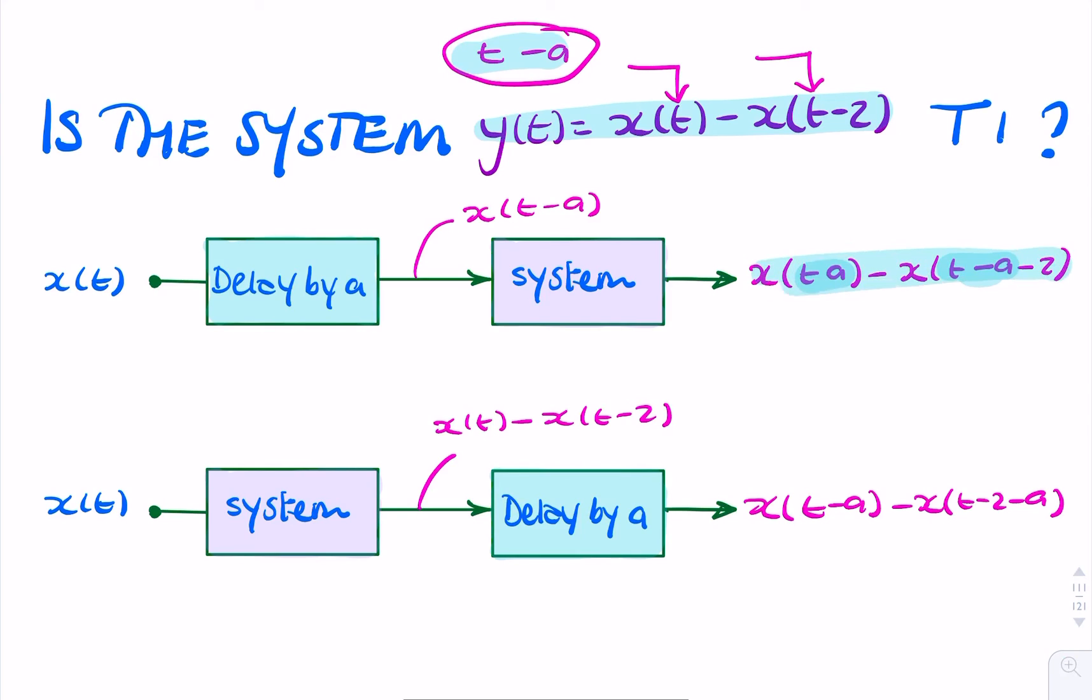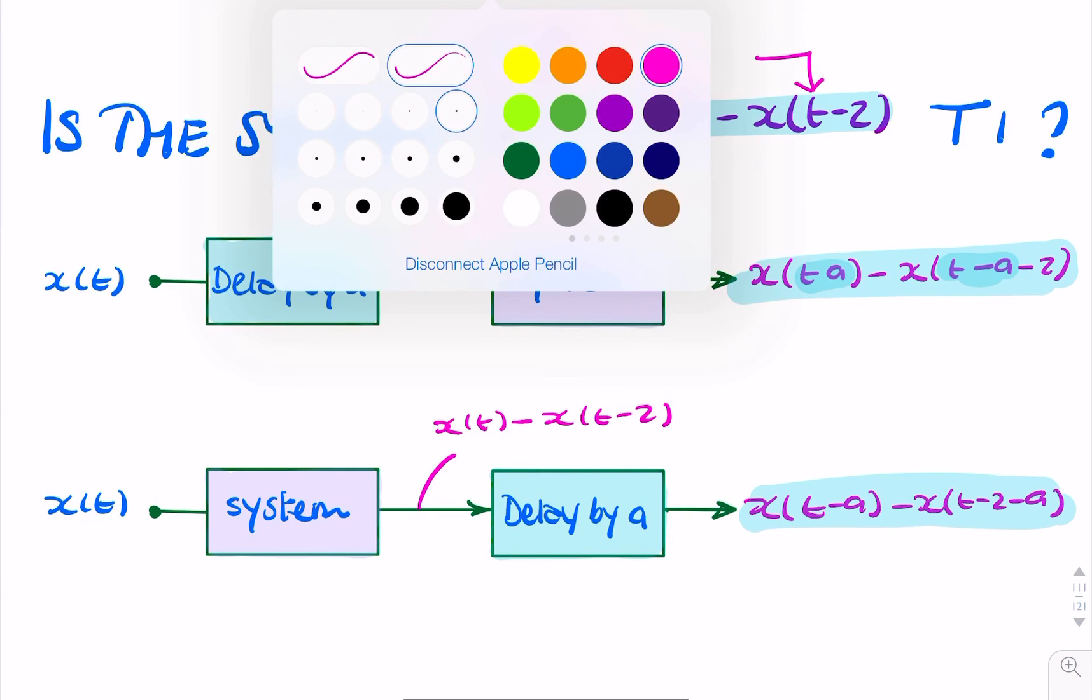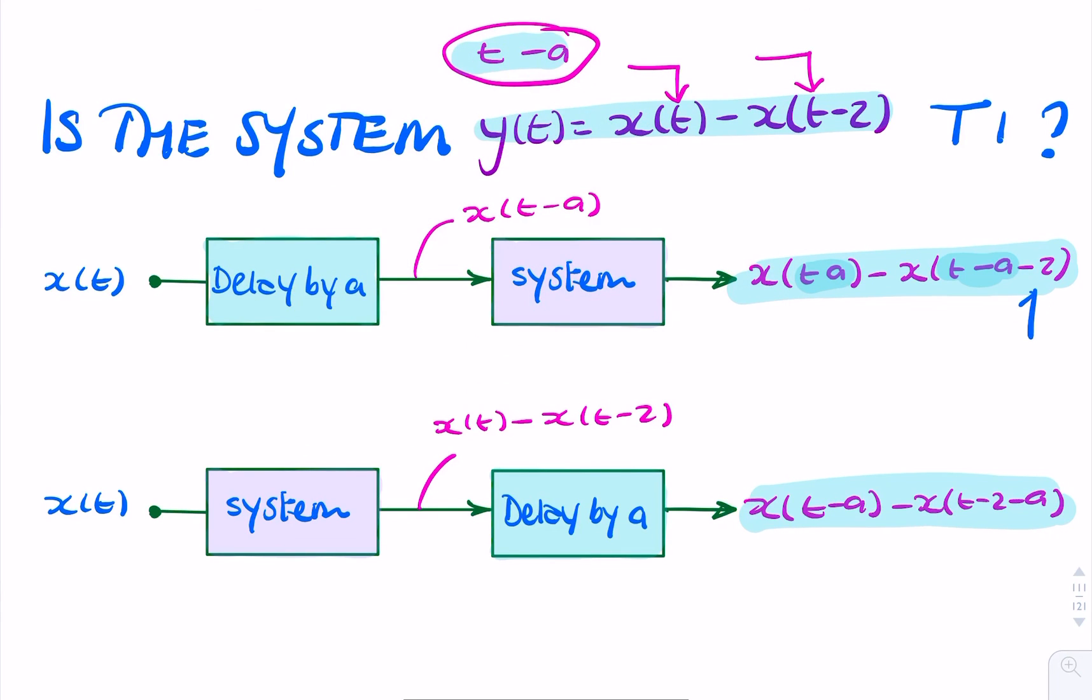And the test for time-invariance is to see whether this and that, whether these two outputs, are the same. And clearly they are. So these are both equal. And we conclude from that that the system is time-invariant.